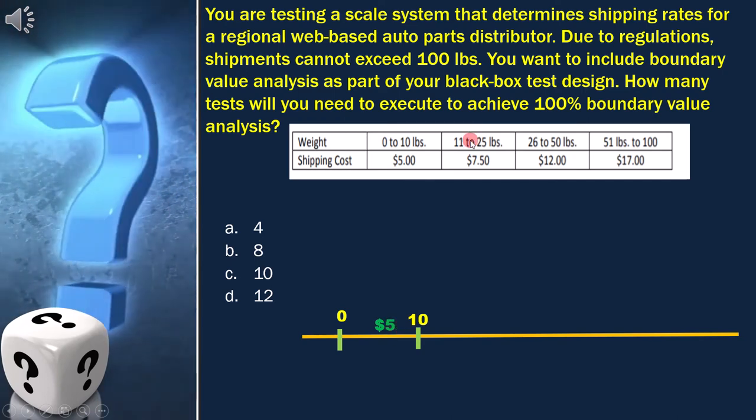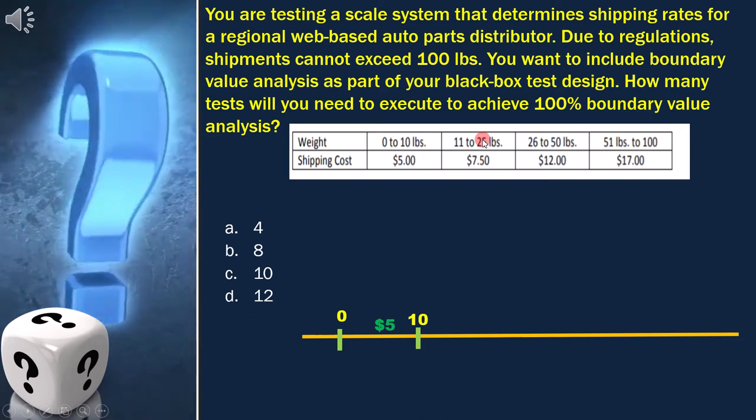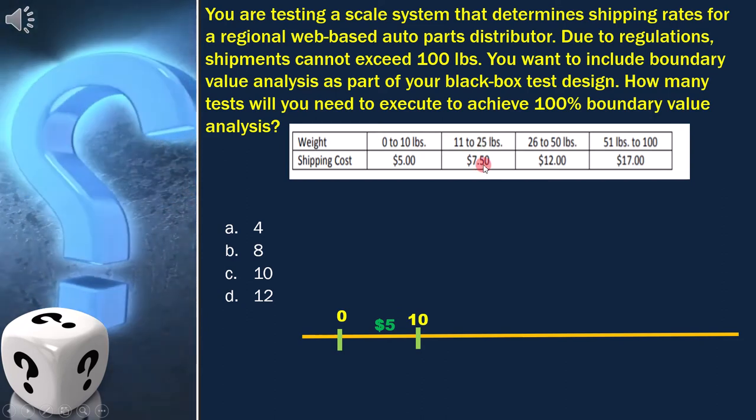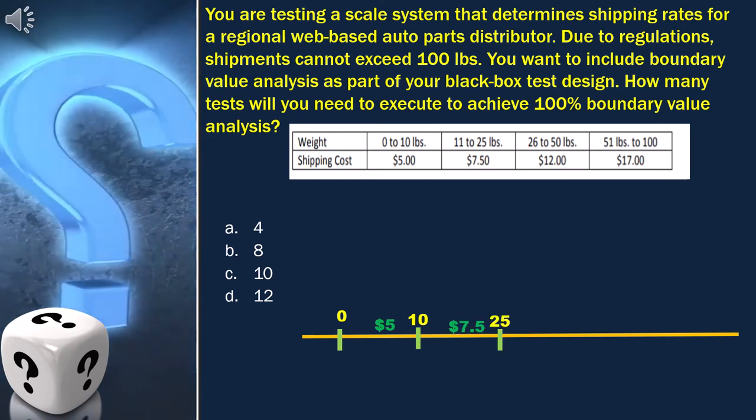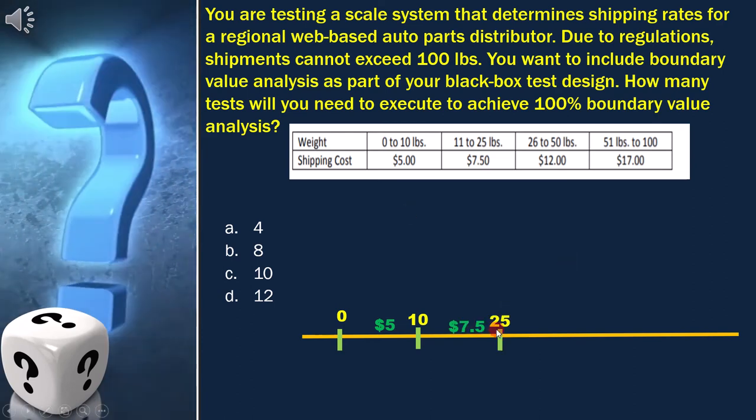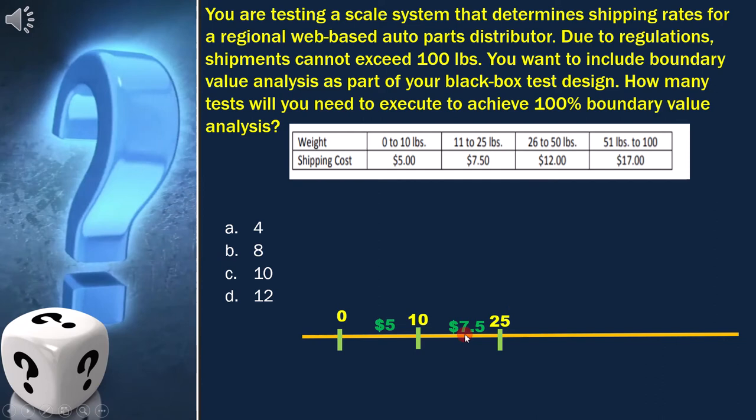Next range is from 11 to 25, and corresponding cost is $7.50. From this we get the next boundary, which is 25, and cost is $7.50.